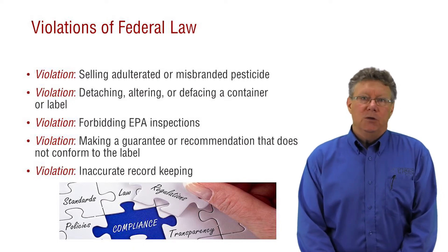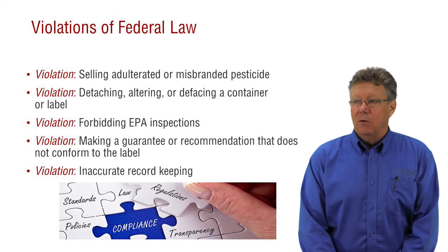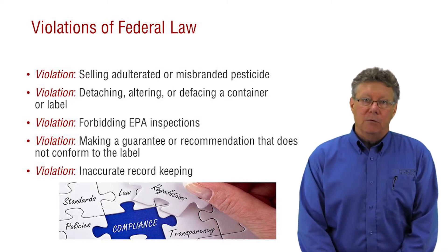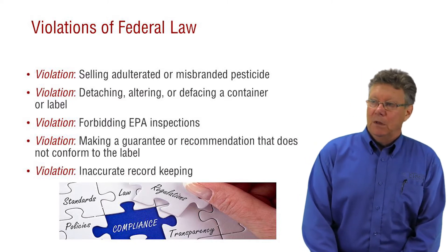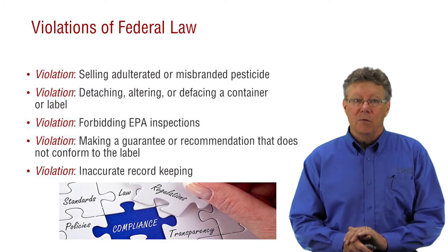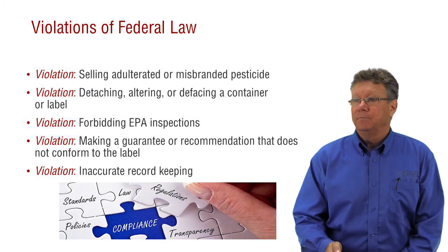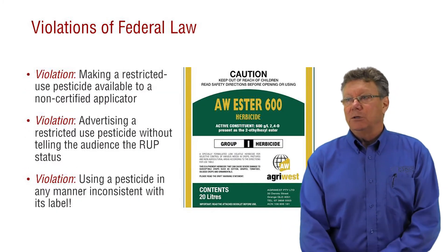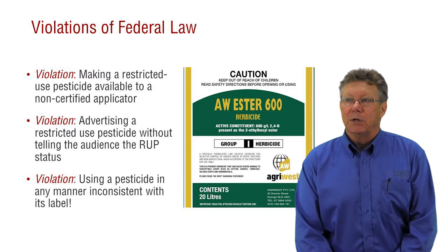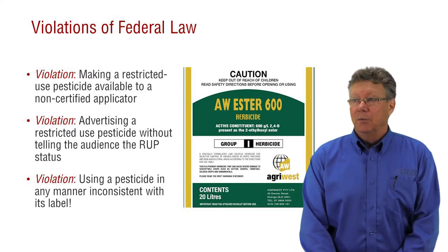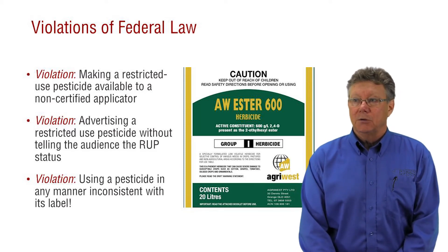EPA and USDA have federal laws that stipulate record-keeping requirements. Inaccurate records are one of the most common violations. It's also a FIFRA violation when a distributor sells a restricted-use product to a person who is not a certified applicator.